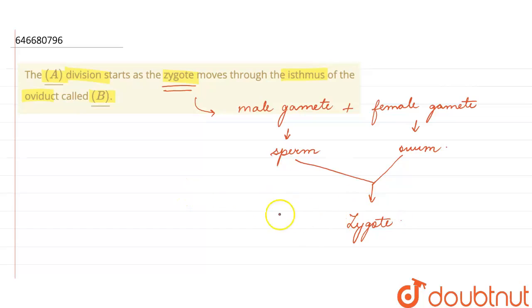And this is called as fertilization. Fertilization takes place in the ampullary region of oviduct. Oviduct are also called as the fallopian tubes, right? So in the ampullary region the fertilization will take place.